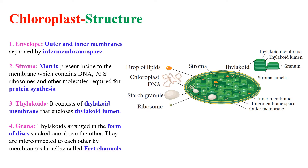Let us see more about chloroplasts. Chloroplasts are green plastids containing a green pigment known as chlorophyll. These chloroplasts are oval shaped organelles consisting of an envelope, stroma, thylakoids, and grana.